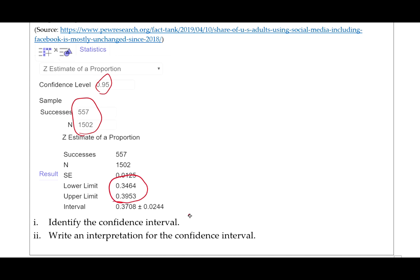So to identify the confidence interval, we'll write this as an interval, so 0.3464 up to 0.3953.